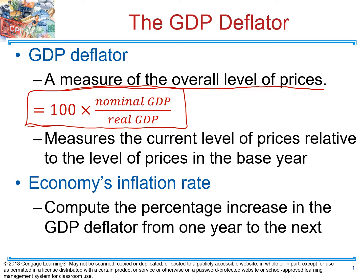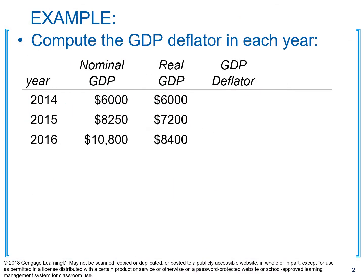Since there are no units attached to it, it is simply an index. After we calculate GDP deflator, we're going to use it to calculate inflation rate. GDP deflator reflects the overall level of prices in our economy, so we can use this measure to calculate inflation rate — which tells us how the level of prices in the economy actually changes.